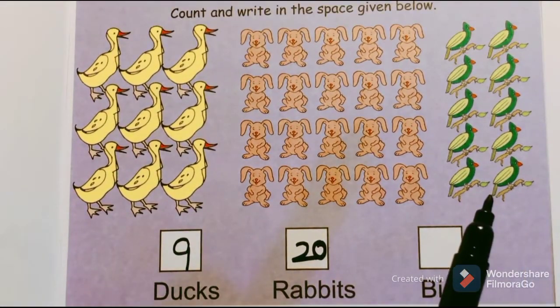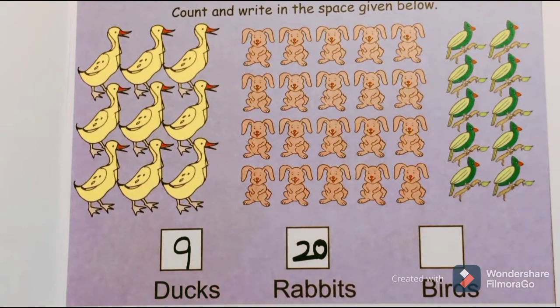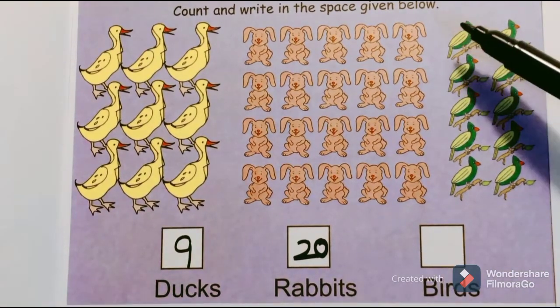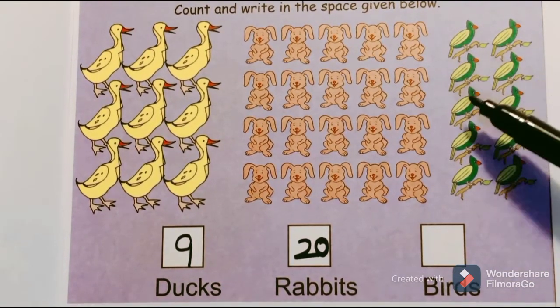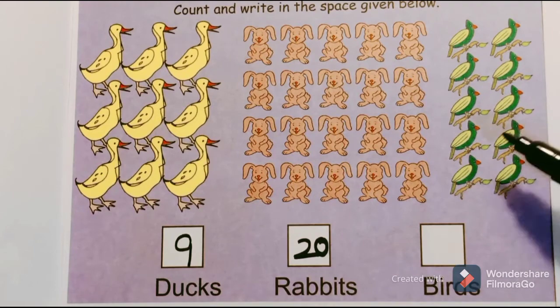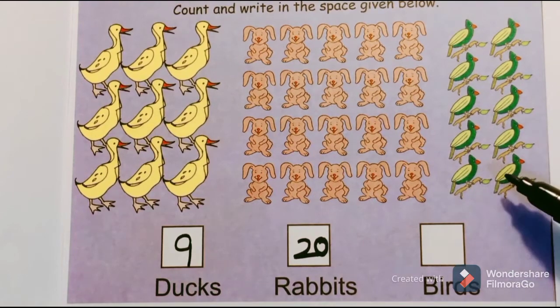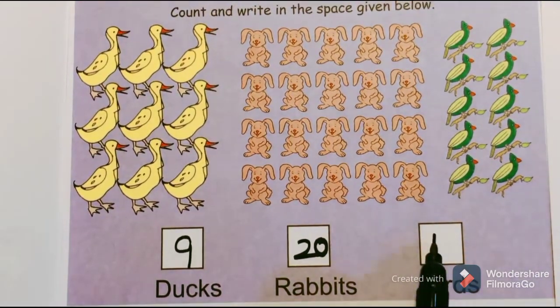Now let us find the total number of birds present here: one, two, three, four, five, six, seven, eight, nine, ten. So how many are there? There are ten birds.